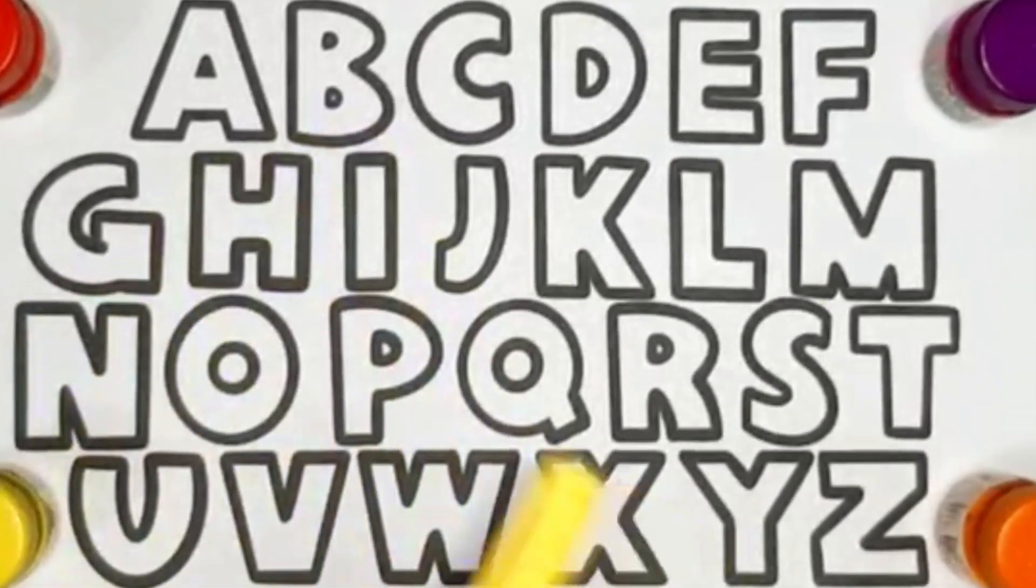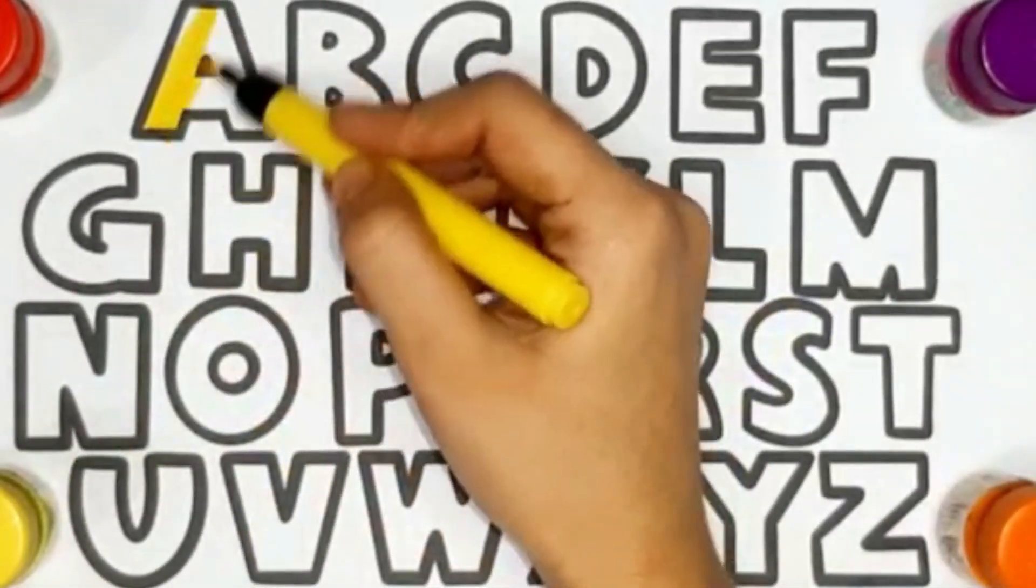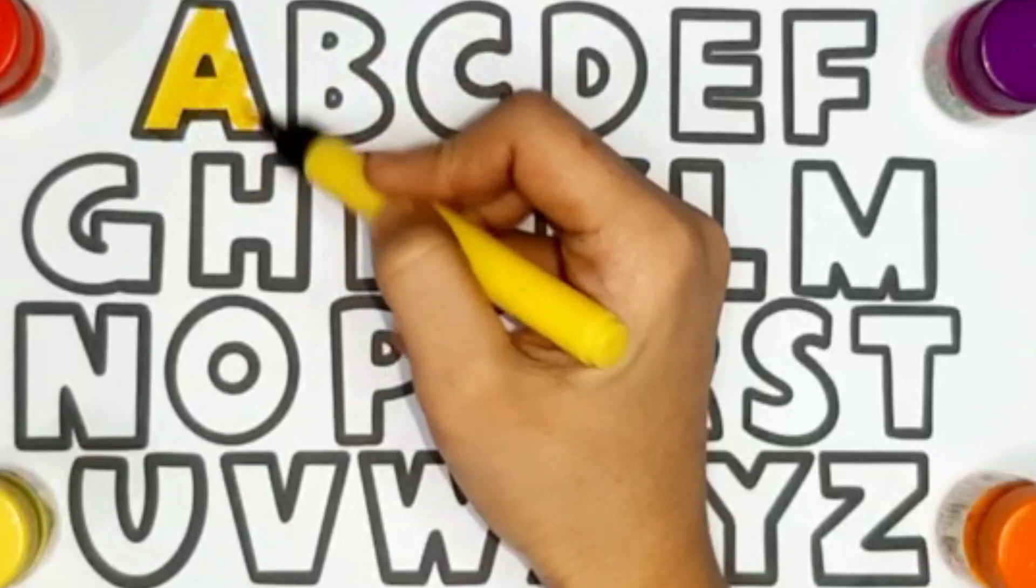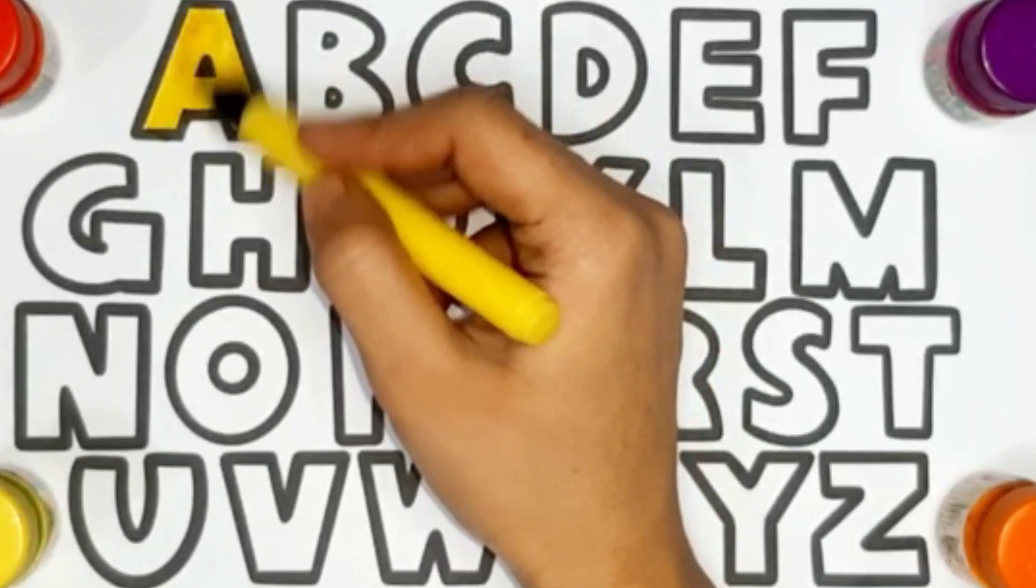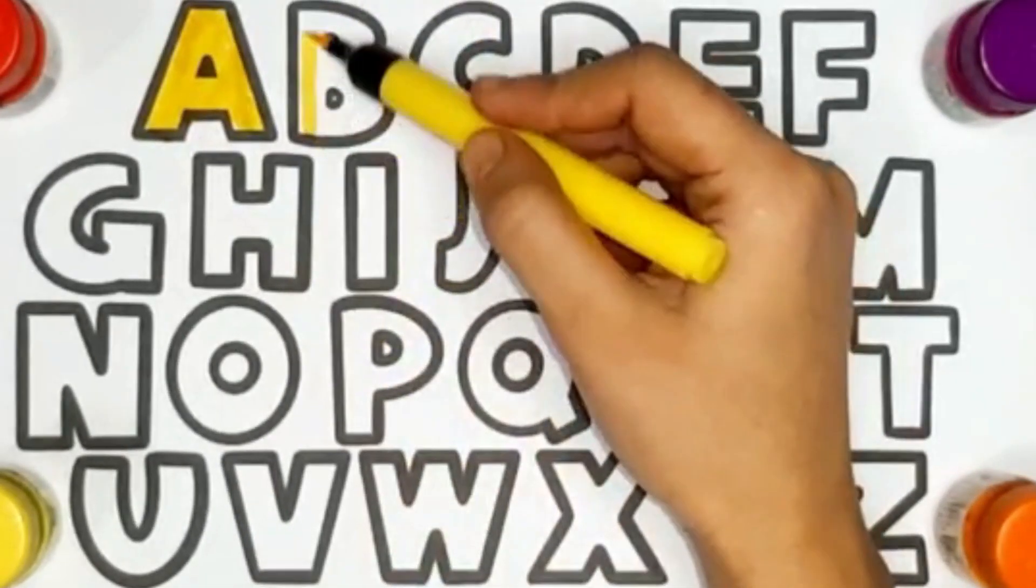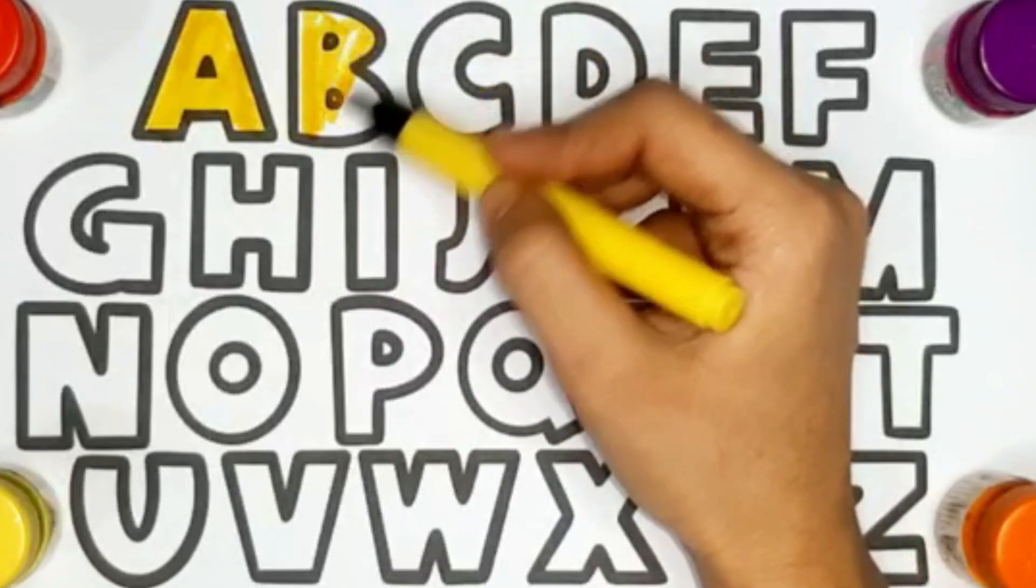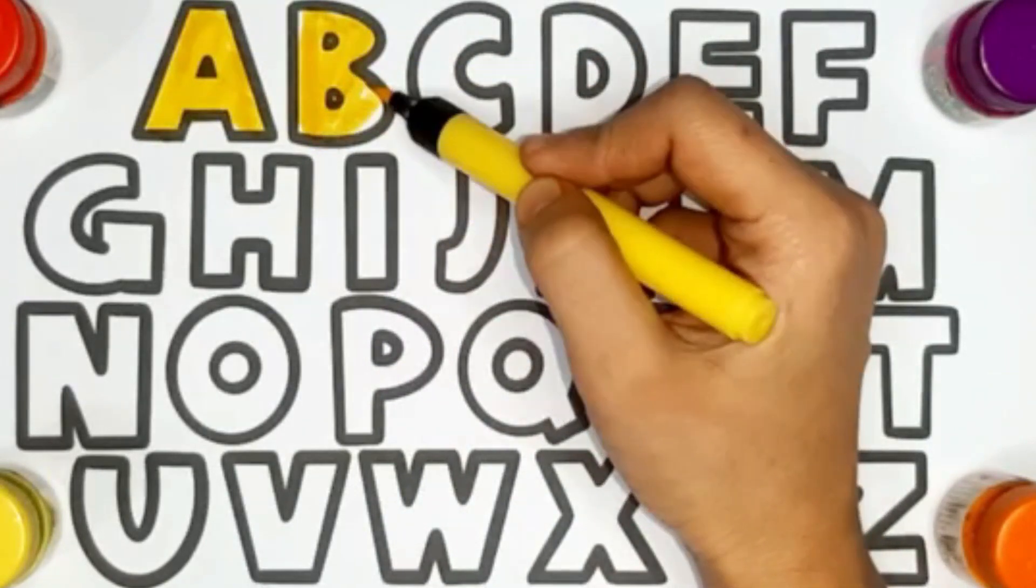Yellow color. A. A for apple. B. B for bat.